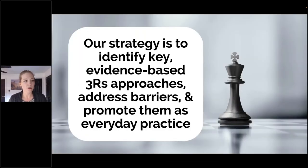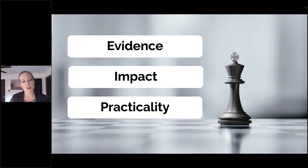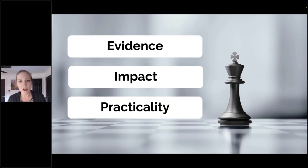Our strategy is to identify key evidence-based 3Rs approaches, address the barriers to them, and promote them as everyday practice. When we're looking for initiatives, we're really looking for three critical things: strong scientific evidence that the 3Rs technique actually works — not just from one paper but ideally from a variety; high impact, meaning things that are going to really improve a lot of animal lives; and practicality of the 3Rs applications.